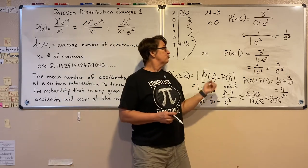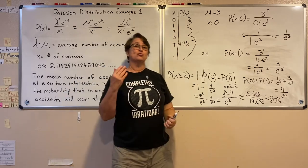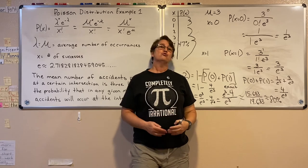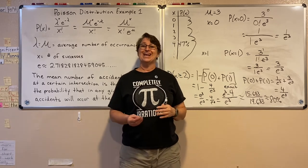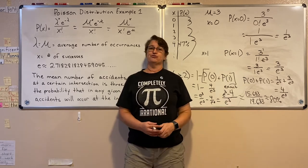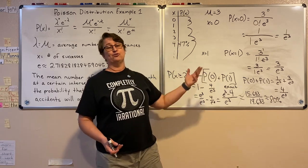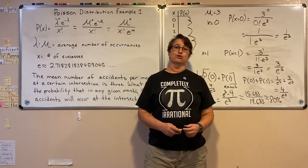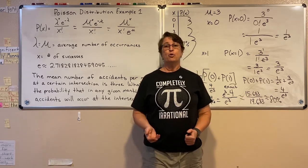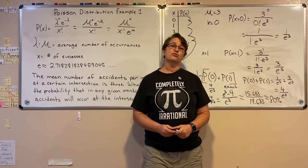Here's where we have to use the complement when dealing with Poisson, because we do not have a fixed number of trials. If I'm looking for the probability of more than two accidents or at least five accidents, I have to use the complement. So there's an example or two of using the Poisson formula to solve for the probability.